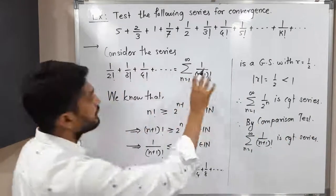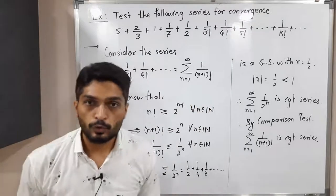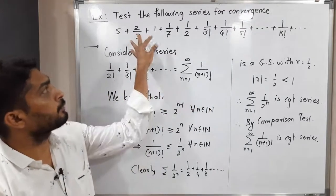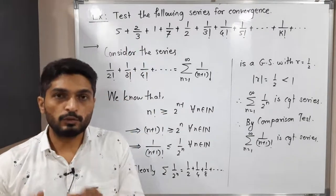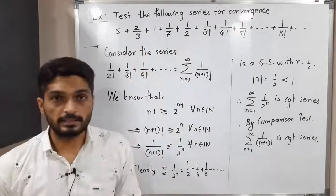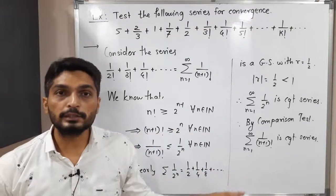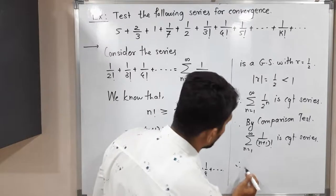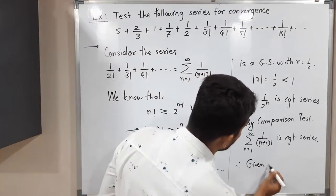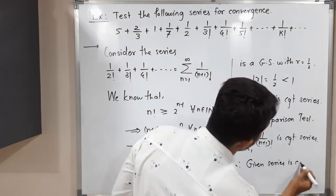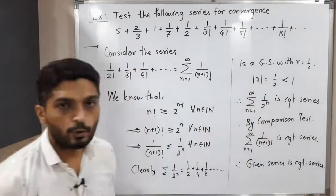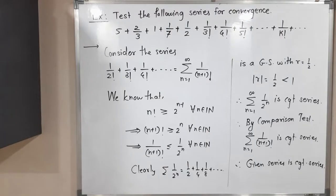That means the series we assumed initially is also convergent. Since we obtained this series by removing the first four terms, adding those terms back gives us the given series. If this reduced series is convergent, the given series is also convergent. Therefore, the given series is a convergent series. That's how we proved convergence using the comparison test.